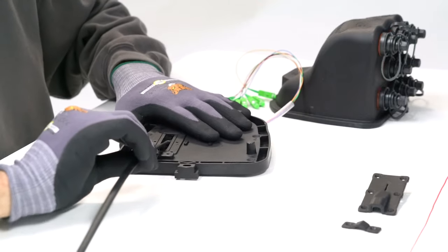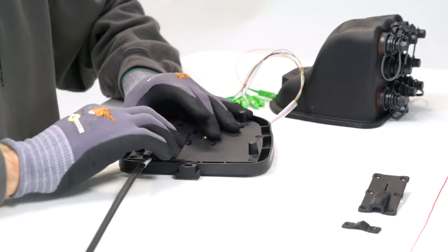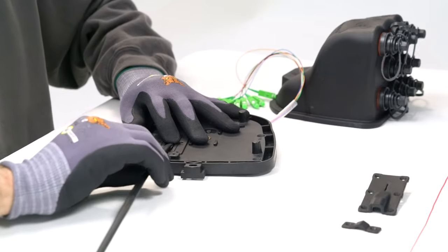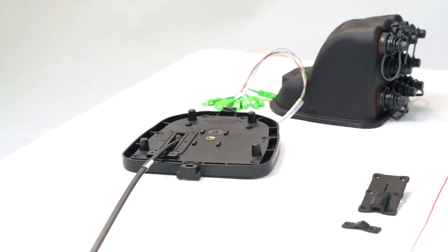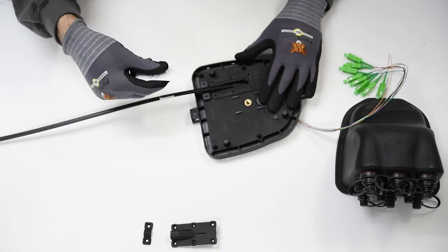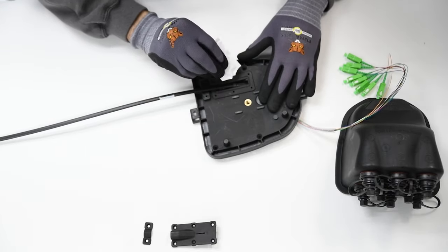Apply sealant to the inside of the grommet. Failure to do so will result in a failed and incomplete seal. Using the supplied sealant packet, apply a small amount around the perimeter of the base entry and the internal grommet.